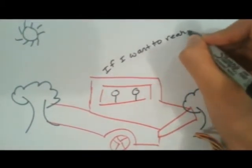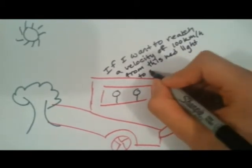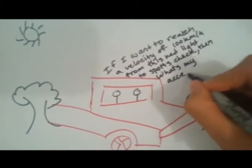During the drive to school, Nick asked Brunyman, if I want to reach a velocity of 100 kilometers per hour from this red light to Sports Check, what's my acceleration?